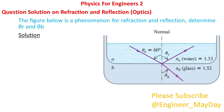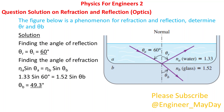Solution. Finding the angle of reflection theta r: theta r equals theta i equals 60 degrees. Finding the angle of refraction theta b: theta b equals 49.3 degrees.